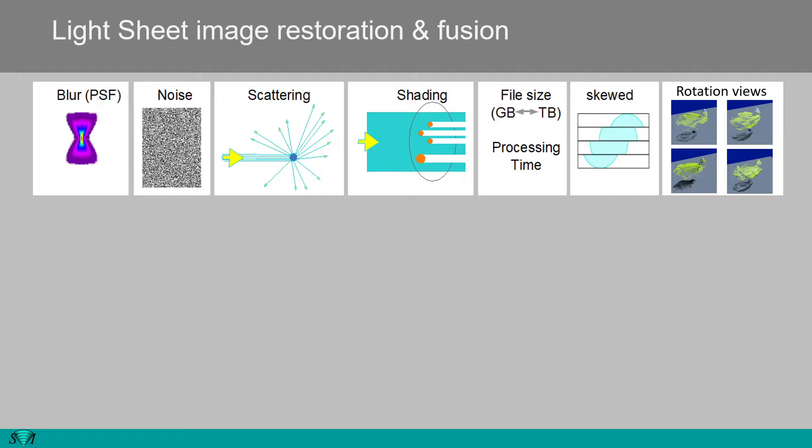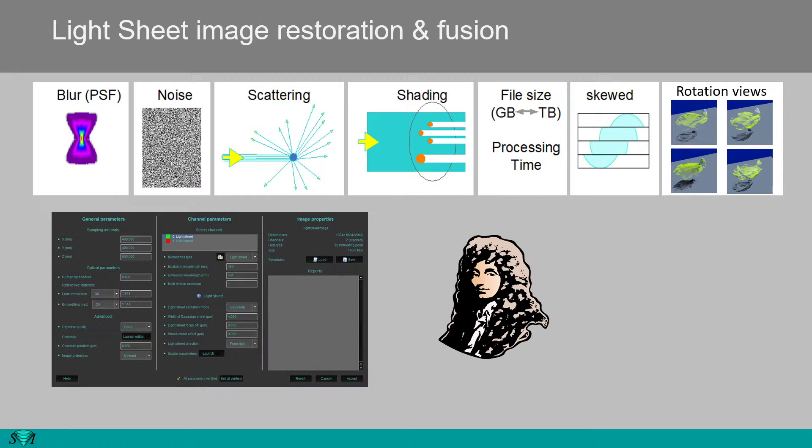Some microscopes require de-skewing of the images. In many cases, the object is imaged from different sides and multiple rotational views should be combined into a single fused image. These challenges are taken care of by the deconvolution and fusion tools in Huygens.